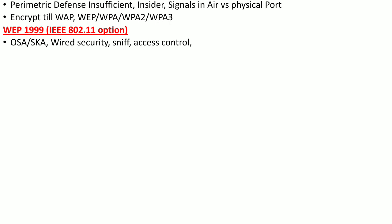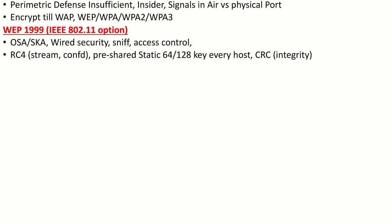The purpose of WEP was to stop a hacker from sniffing wireless traffic and to control access to the wireless access point. WEP uses the RC4 stream cipher for confidentiality. RC4 uses a pre-shared static 64-bit or 128-bit key that is the same for every host. It also uses a Cyclic Redundancy Check (CRC) for data integrity.